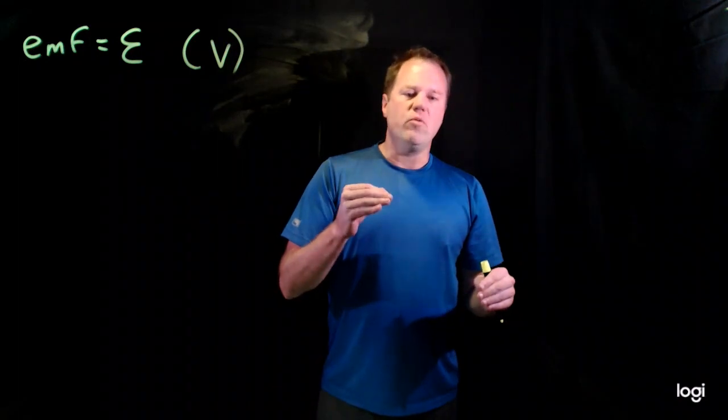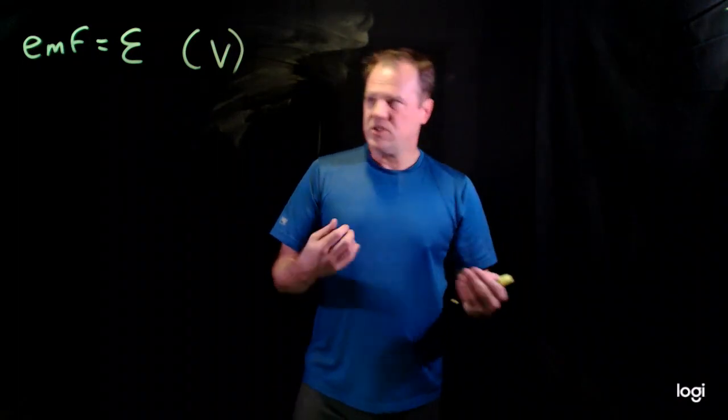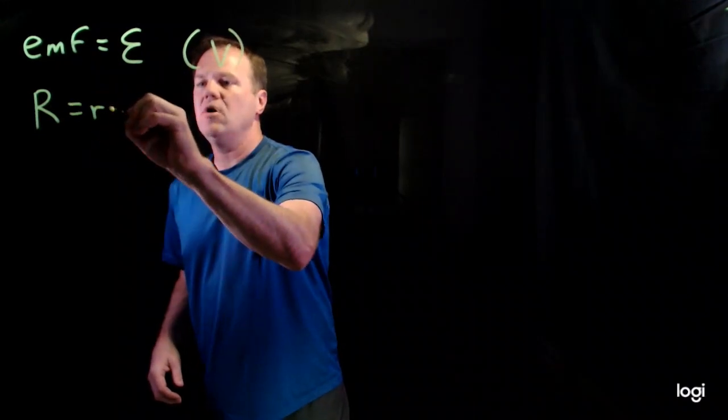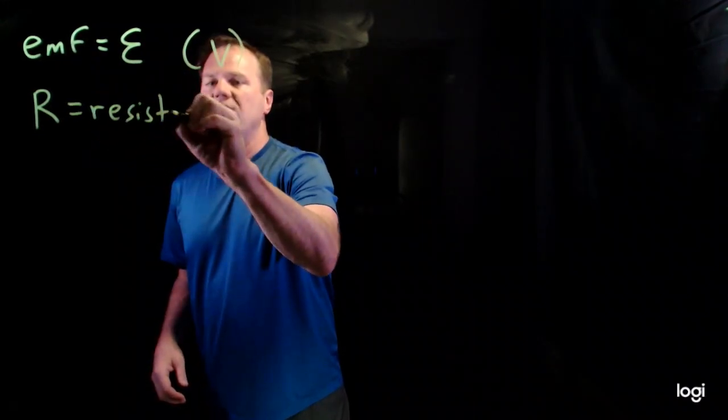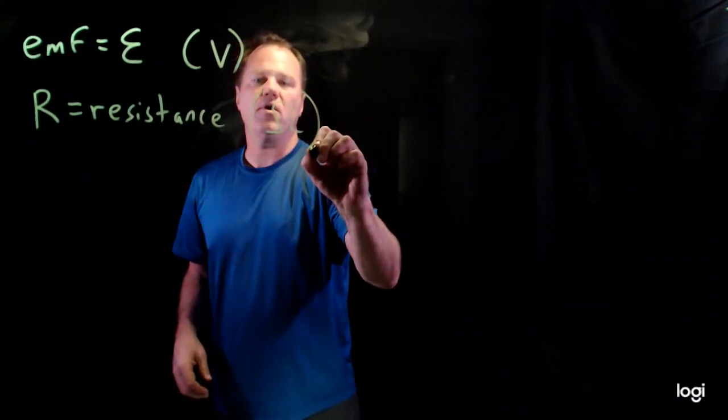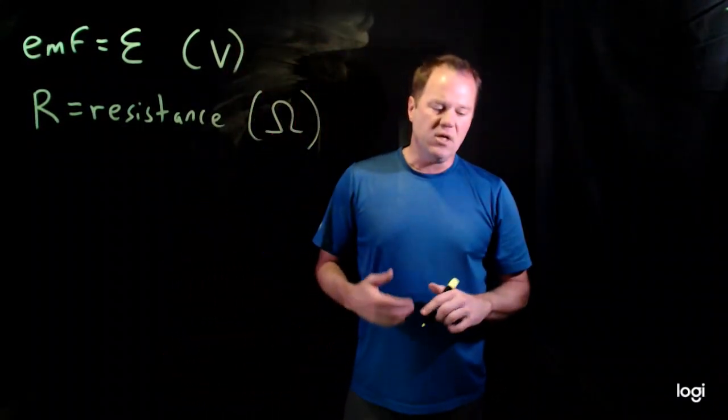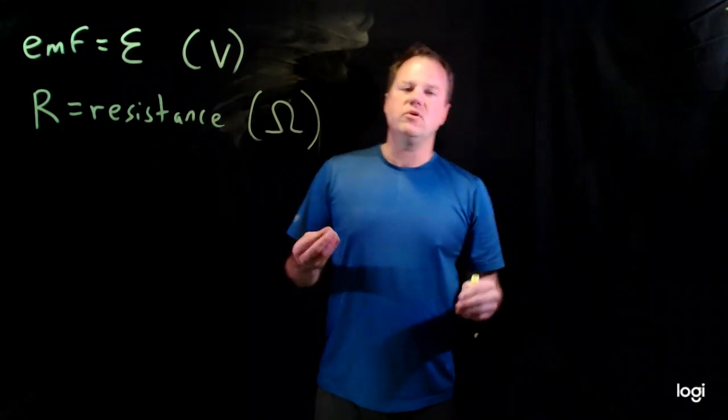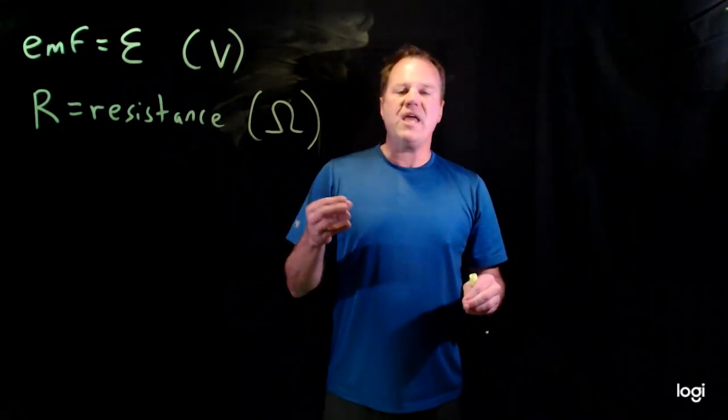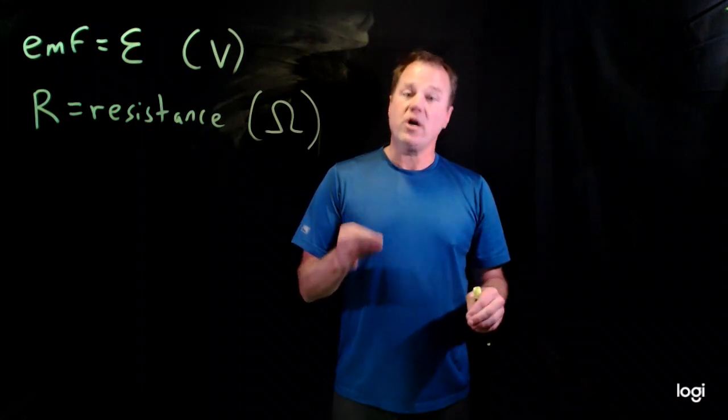Resistors and other ohmic devices have a property called resistance. And so we use a symbol capital R for resistance. It has SI units of ohms. Use the Greek letter omega for that. And typically we can determine the resistance of a resistor or other ohmic device based on the physical construction of that device.